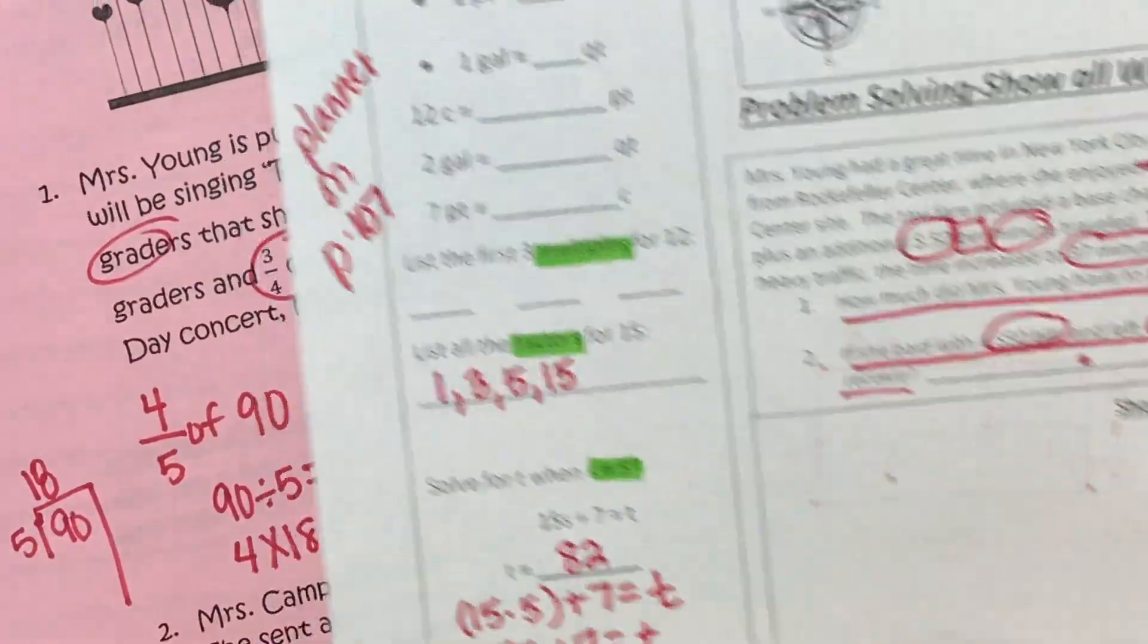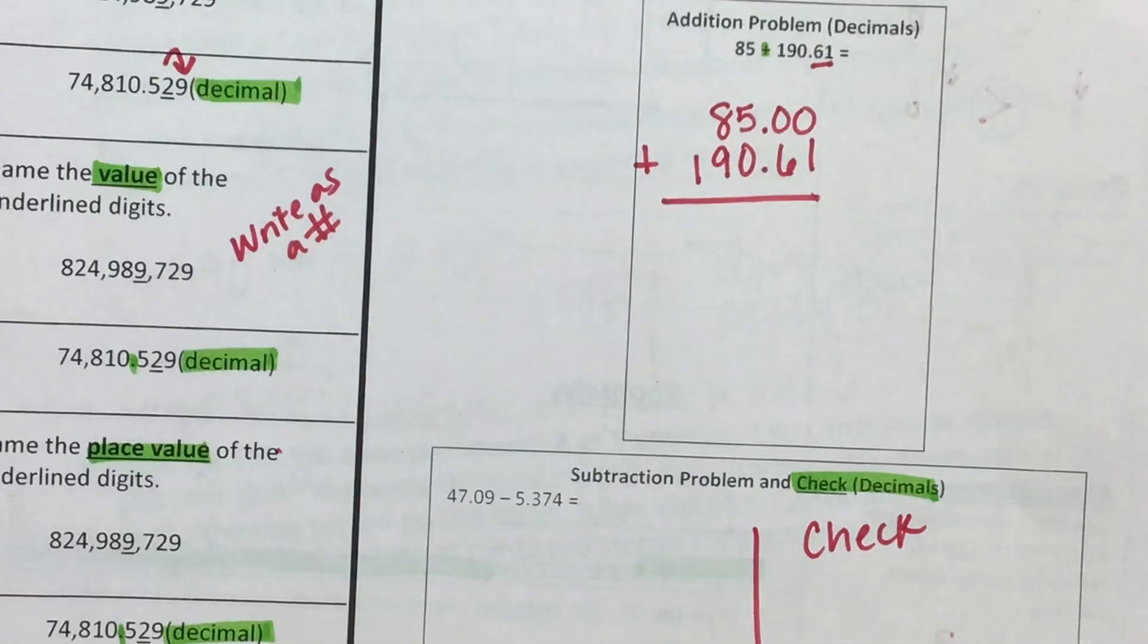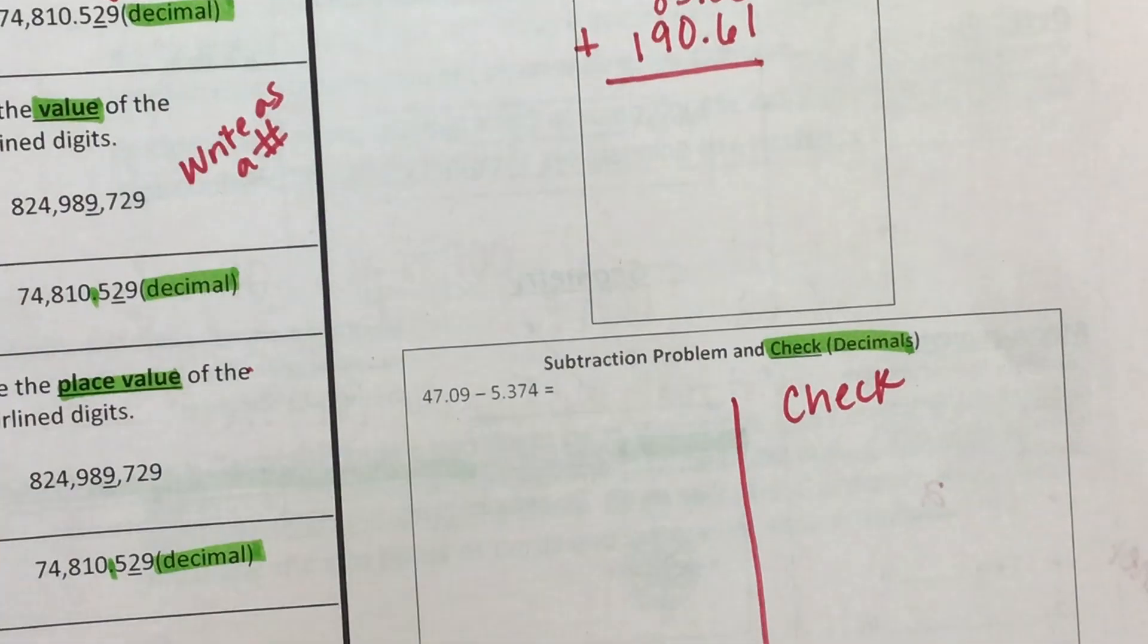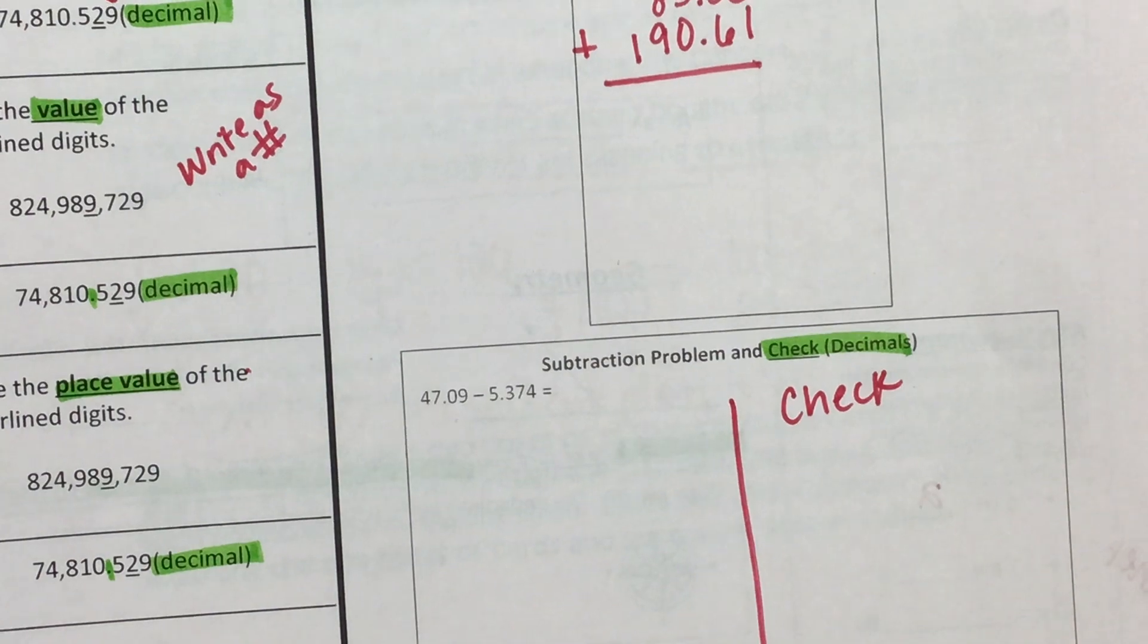Go ahead and put that plus the problem solving paper in your math folder. You can put the spiral in your VIP folder if you choose.